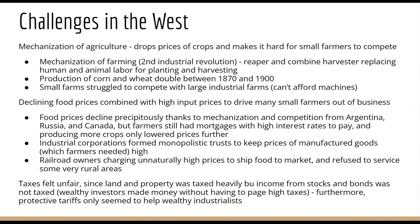These declining food prices combined with very high input prices to drive a lot of small farmers out of business. Food prices declined precipitously thanks to mechanization and also competition from grain coming from Argentina, Russia, and Canada. But farmers still had these mortgages and really high interest rates to pay, and producing more crops — which seemed like a solution — only helped to lower prices even further. Industrial corporations formed monopolistic trusts to keep the prices of manufactured goods, farm tools, and equipment really, really high.